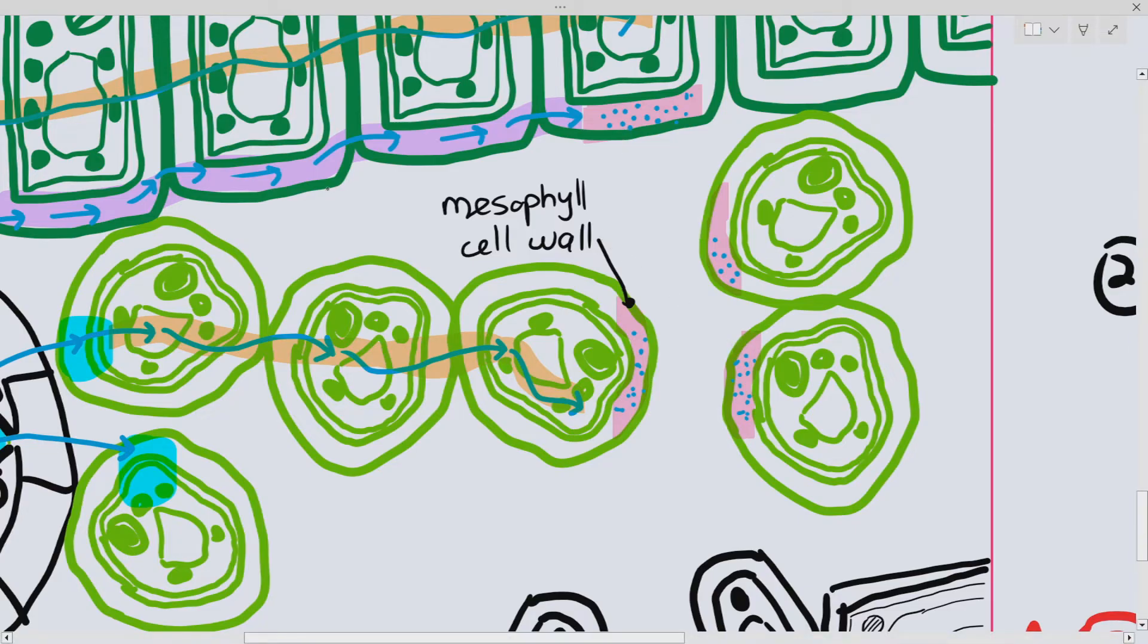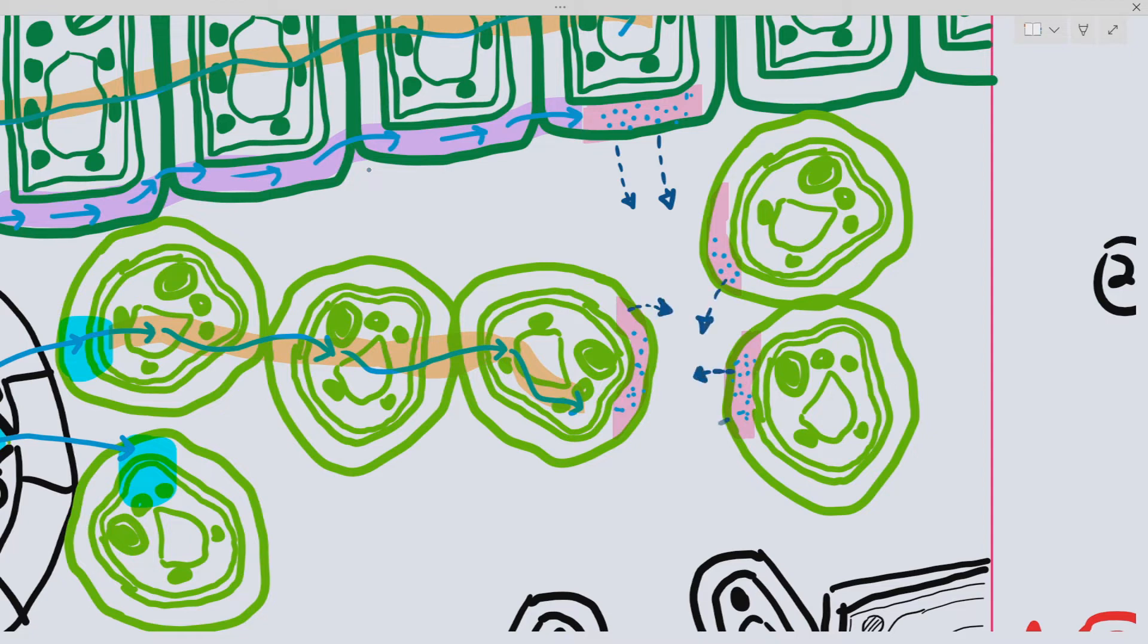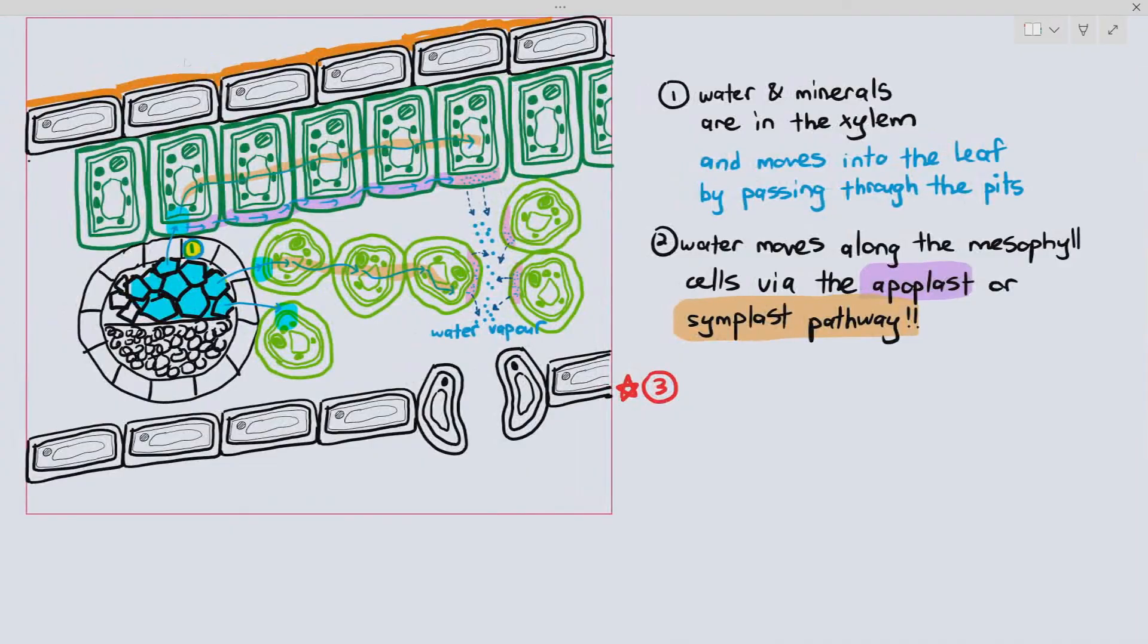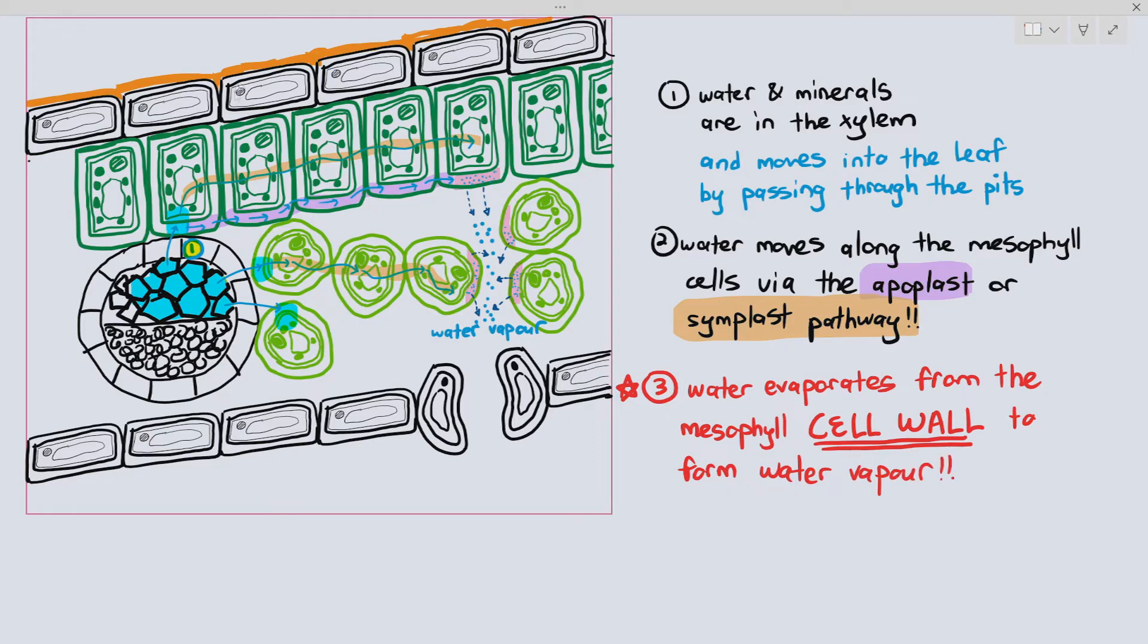And in this case, what will happen is the water molecules will start to evaporate into the airspace. And when the water molecules evaporate into the airspace, they will form something called water vapor. This is an extremely important process that happens in the leaf where water molecules evaporate from the mesophyll cell wall.